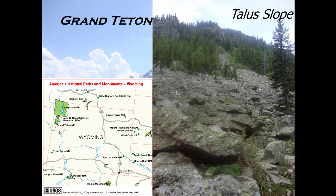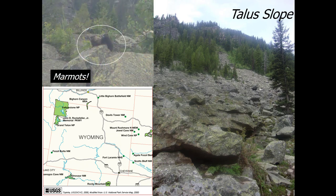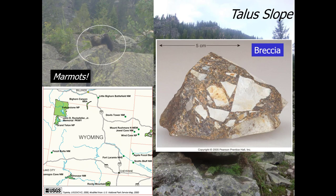Along the Tetons, there is a talus slope — a pile of rocks basically at the base of the mountains. The particles in this talus slope have experienced very little weathering: they are a variety of grain sizes and largely very angular in shape. Marmots — cute little fluffy rodents — are perfectly adapted to live in talus slopes with their great little claws for scrambling around.